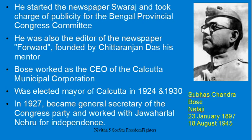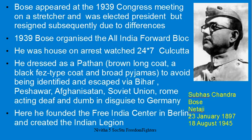Bose worked as CEO of the Calcutta Municipal Corporation and was elected Mayor of Calcutta in 1924 and 1930. He also became General Secretary of the Congress Party in 1927. Netaji belonged to the school of radical nationalists, opposing Gandhi's views of non-violent Ahimsa and Satyagraha for India's freedom struggle.